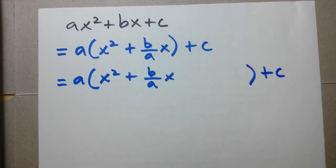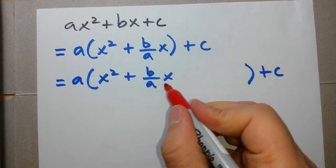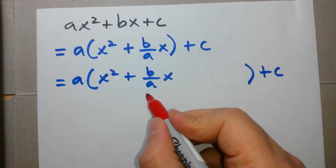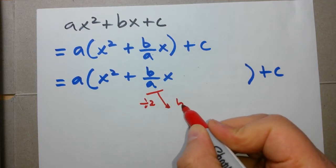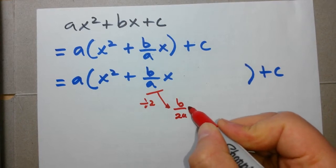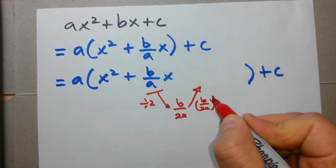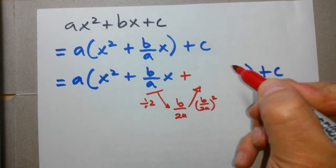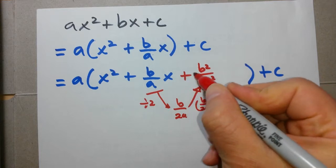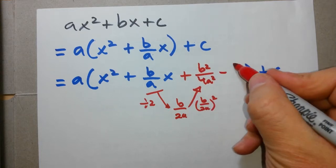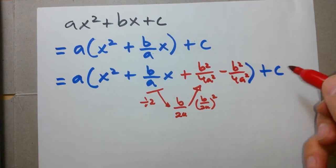Next, what we do is just like before, we divide this term by two and then we square the result. So if we divide it by two, we're going to end up with b over 2a. And then if we square this result, b over 2a squared, we're going to end up with b squared over 4a squared. So plus b squared over 4a squared, minus b squared over 4a squared, close bracket, bring down the c.